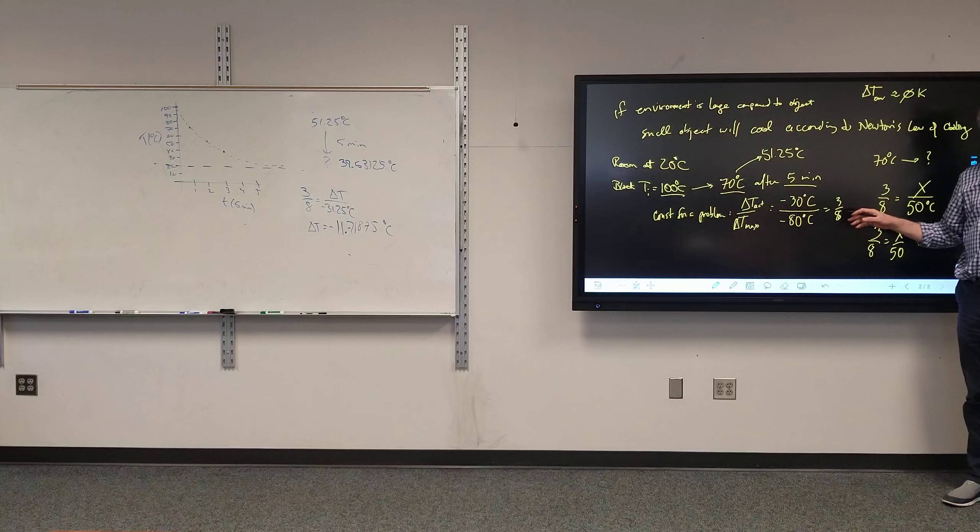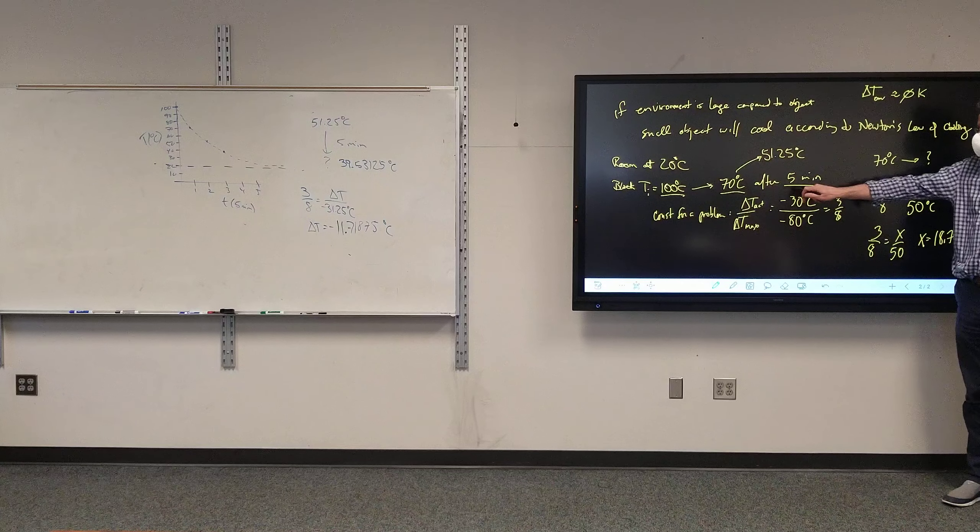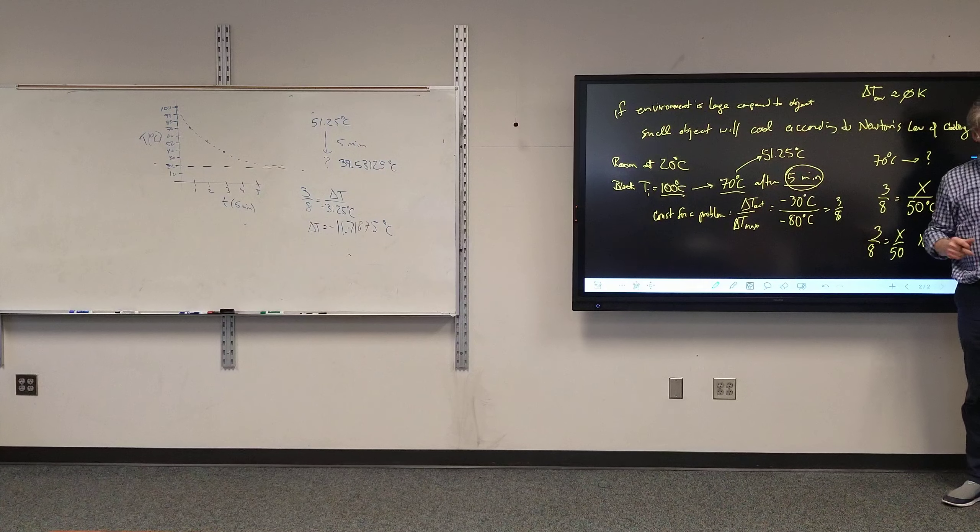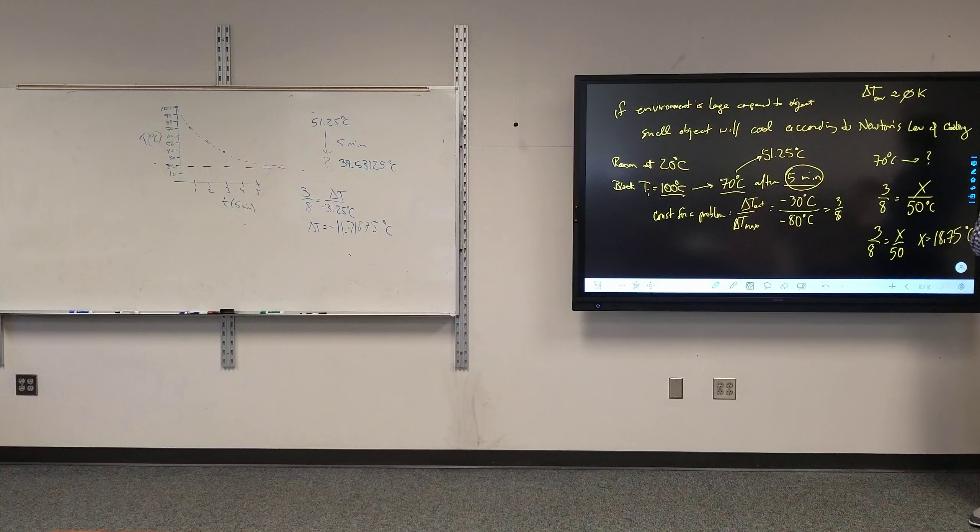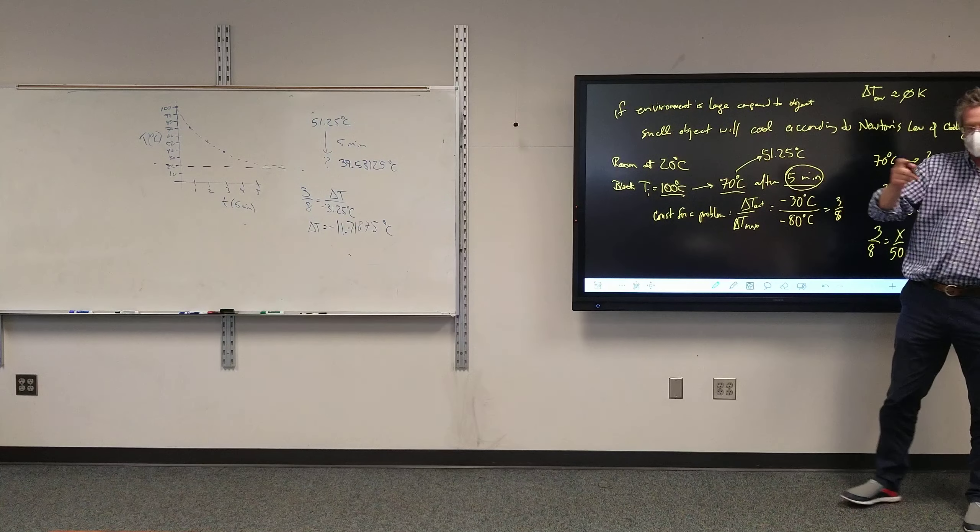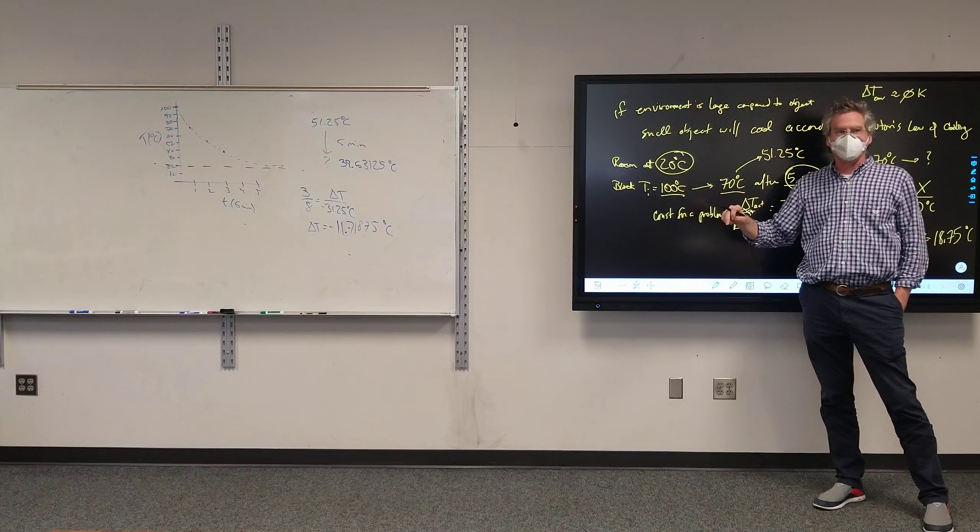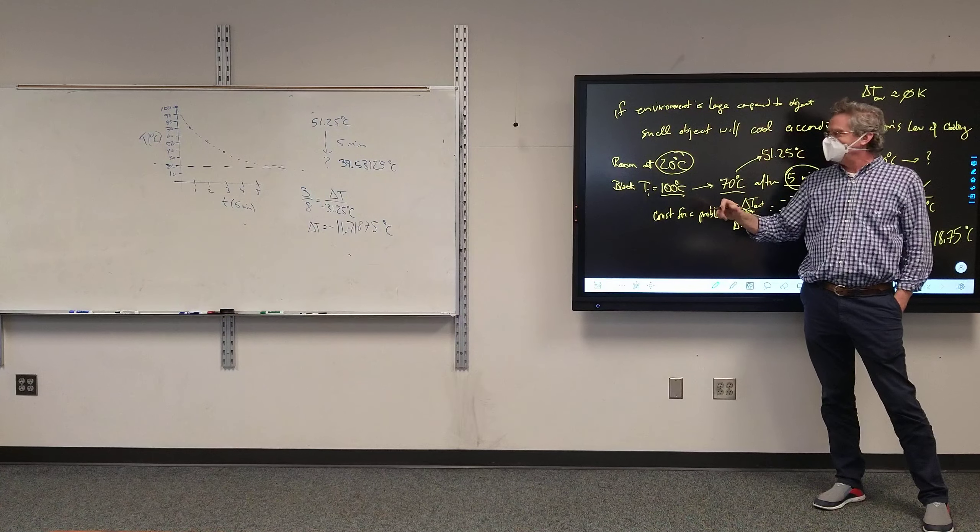So, you see where we've got the three-eighths. What we're saying is that every time, every five-minute increment, because that's what I established in the problem, it's going to lose three-eighths of what it could lose. What it can lose, as was said before, is that the coldest it can be is the room temperature. It won't get colder than the room.